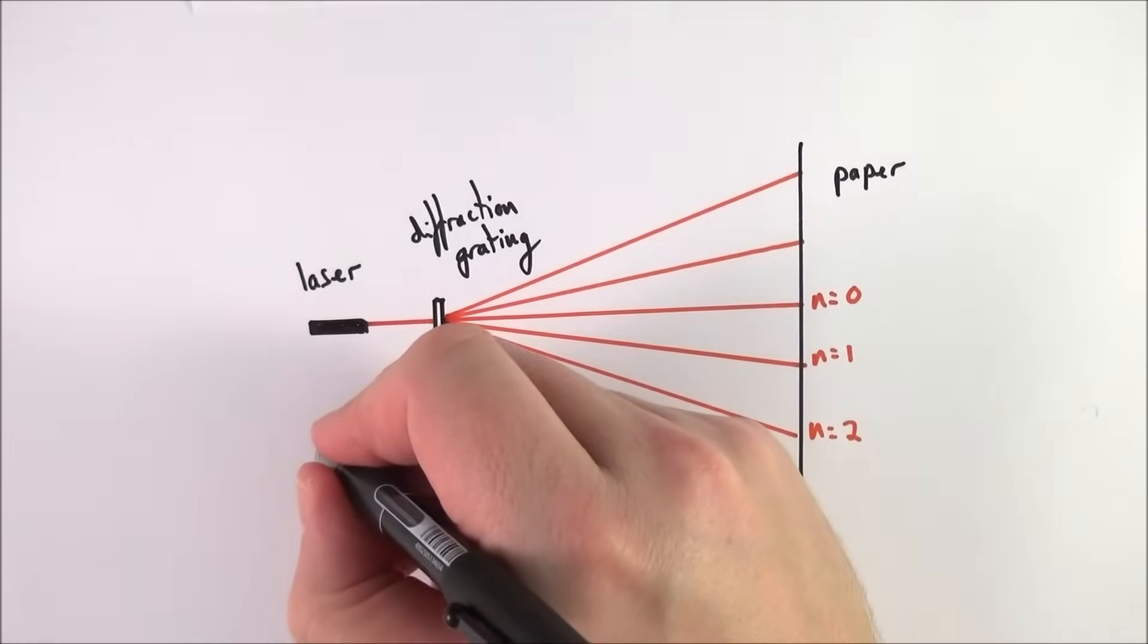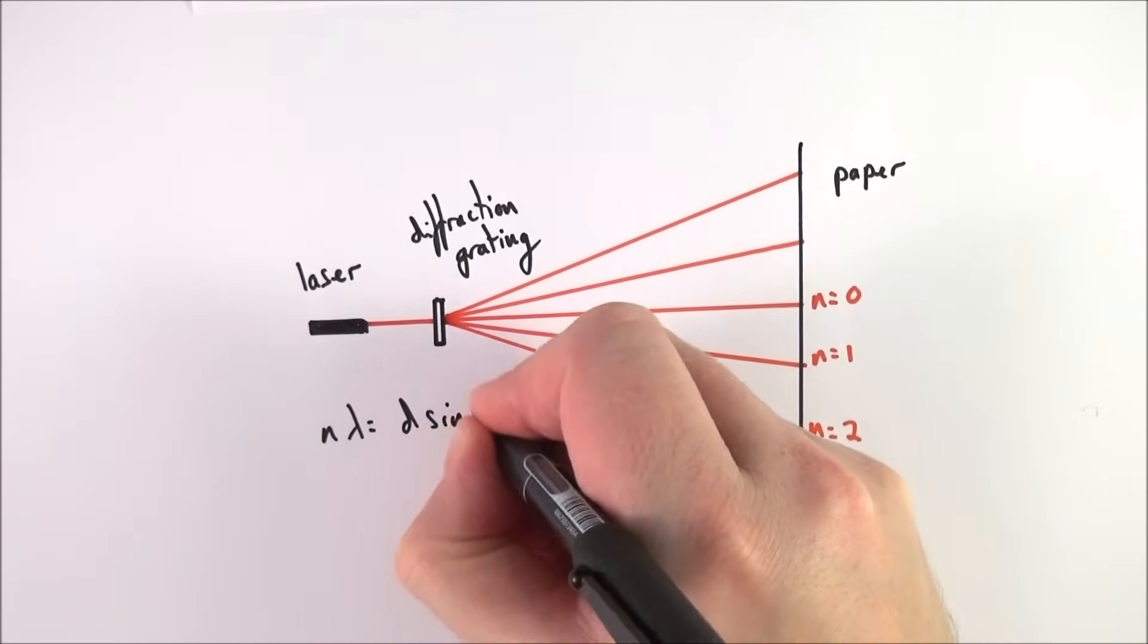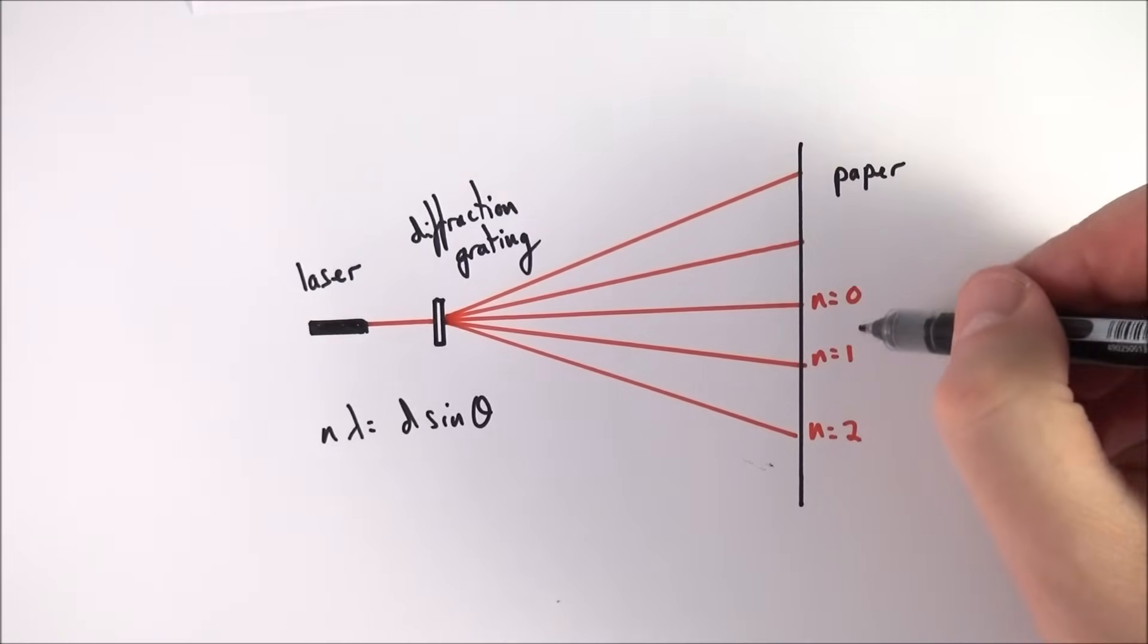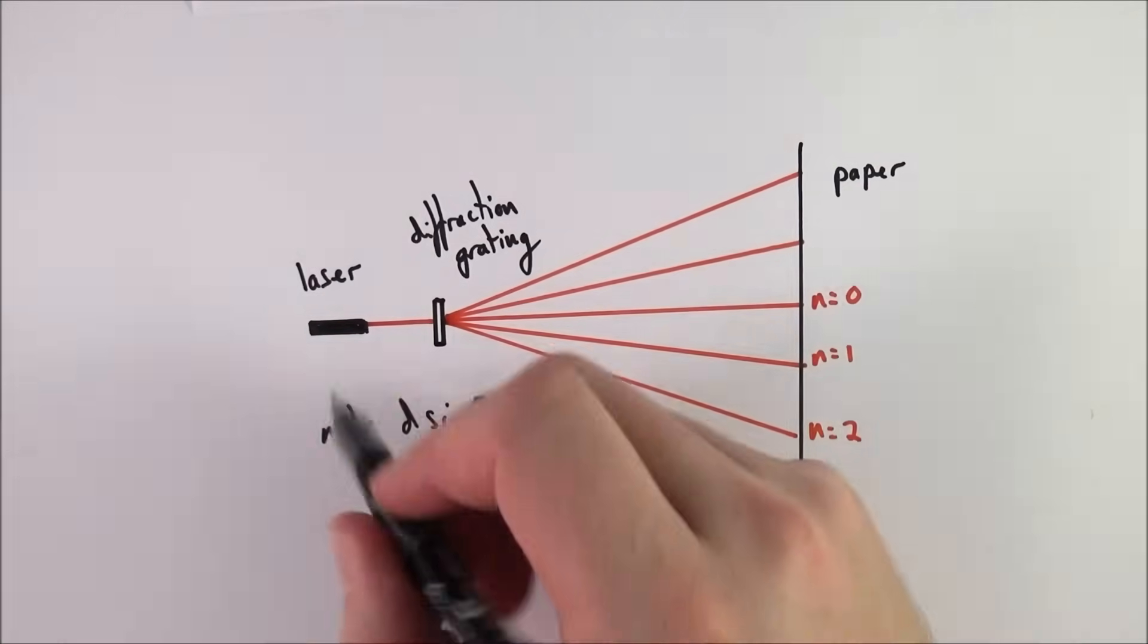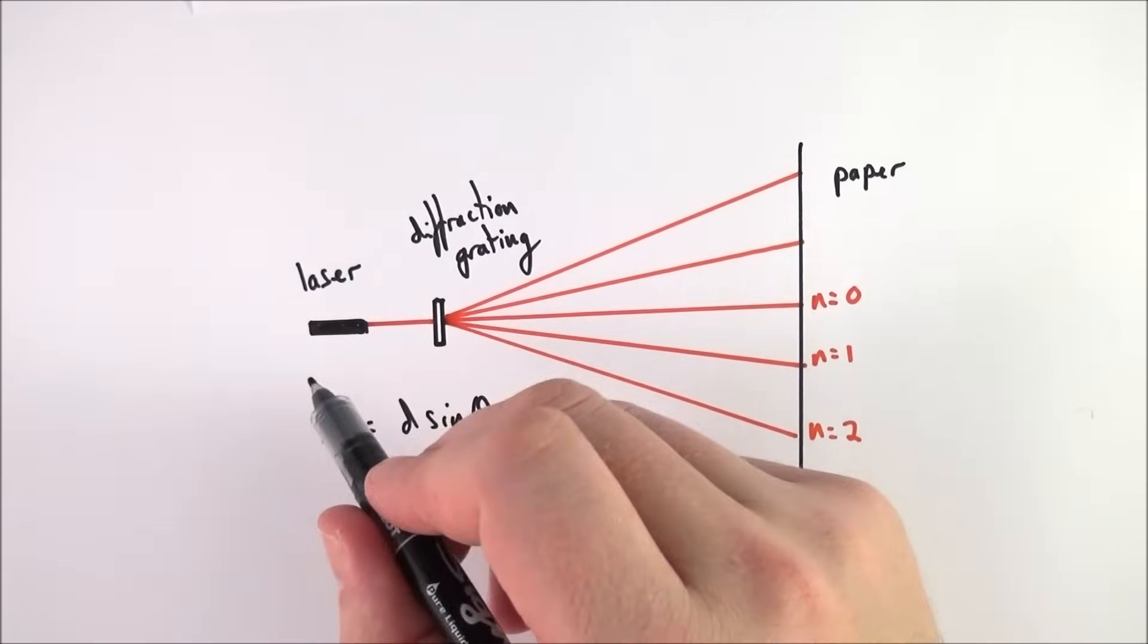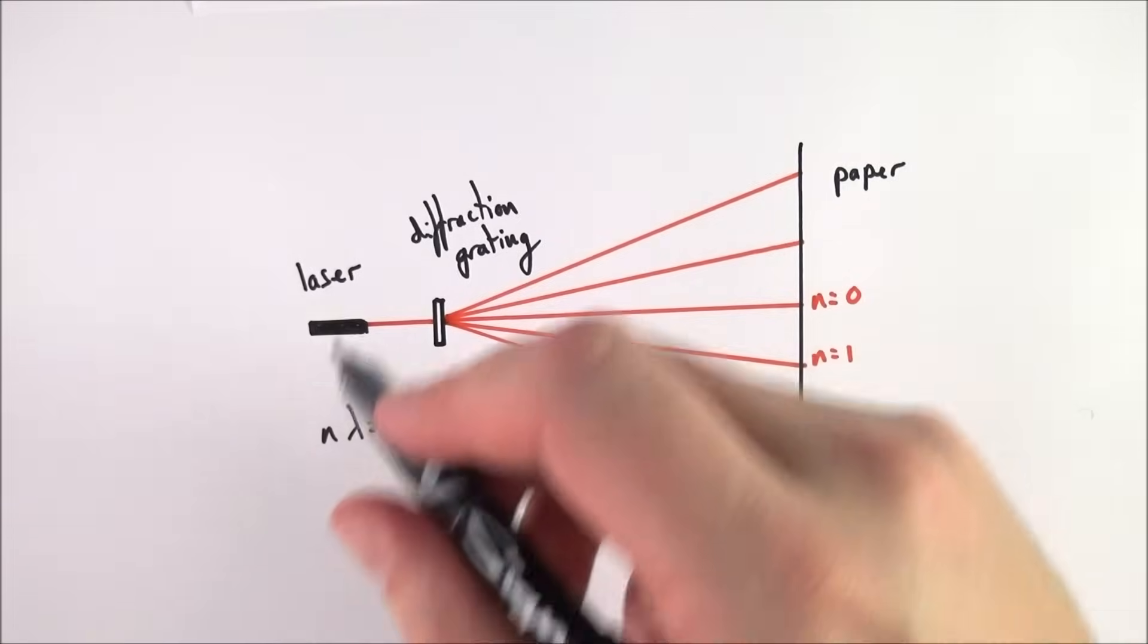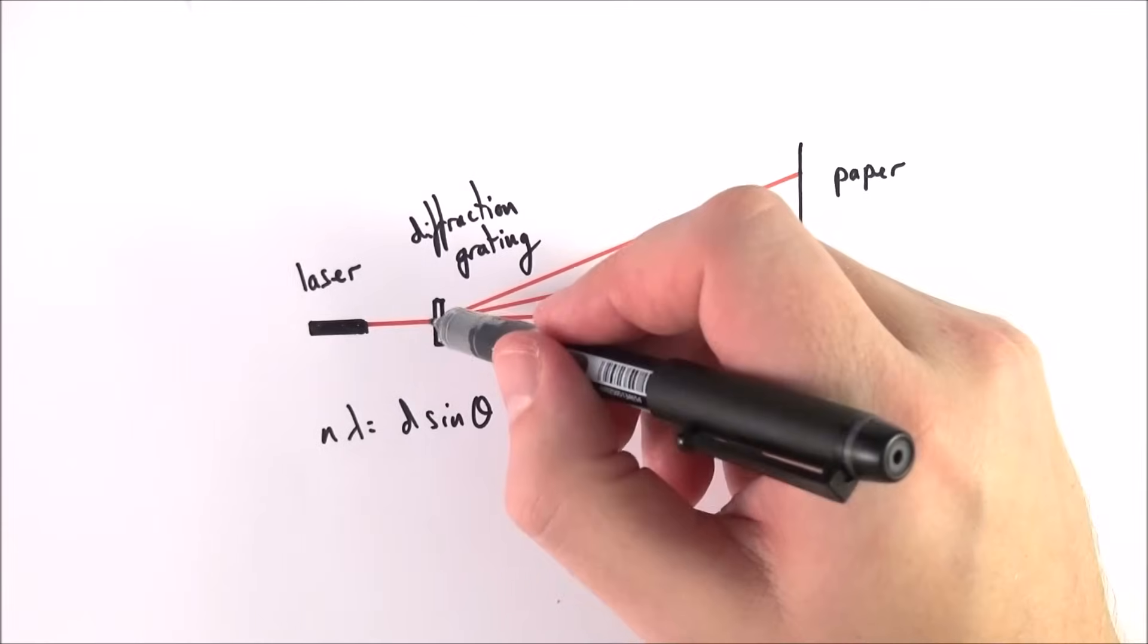The theory says that n lambda equals d sine theta. So n is just the order of the maxima, so we've got n equals one, n equals two, then n equals three and so on. Lambda, that's the wavelength of the laser light, which should be the same because it's this nice coherent laser source.